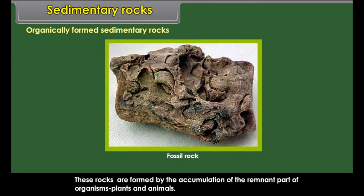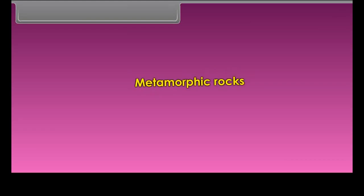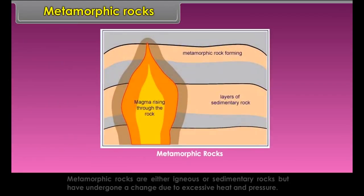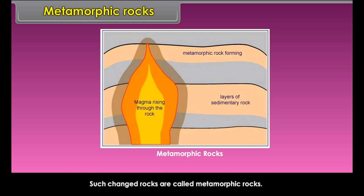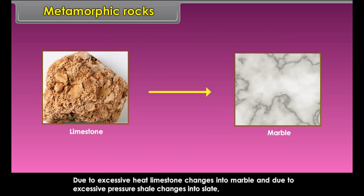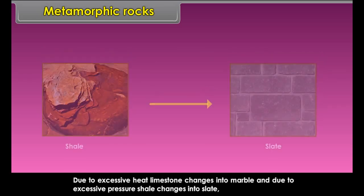Chemically formed sedimentary rocks. These rocks are formed by the process of evaporation of water containing mineral salts in solution. In deserts or shallow lakes, water gets evaporated, leaving behind a layer of salts, which get consolidated into sedimentary rocks. Common salt, gypsum, and nitrates are some examples of chemically formed sedimentary rocks.